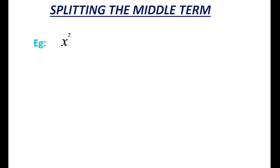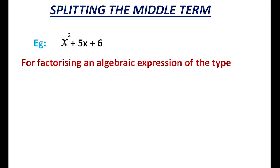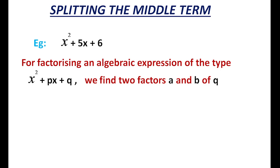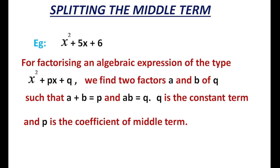Let's consider one example: x² + 5x + 6. Here the coefficient of x² is 1 only — that type of problem only we are discussing in this video. For factorizing an algebraic expression of the type x² + px + q, q is the constant term, px is the middle term, coefficient of the middle term is p, and the coefficient of x² is 1. We find 2 factors a and b of q such that a + b = p and ab = q.